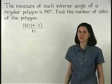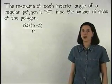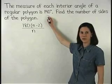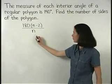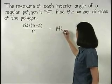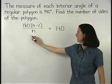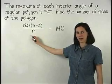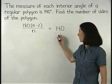And since the measure of each interior angle of the given regular polygon is 140 degrees, we can set our formula equal to 140. So we have 180 times n minus 2 divided by n equals 140.